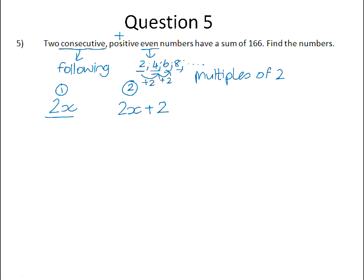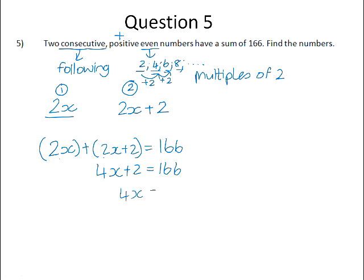So I am told here that two consecutive even numbers have a sum of 166. So if I add them, 2x plus 2x is 4x. 4x plus 2 is 166. Minus 2 from both sides gives you 4x to be 164. 164 divided by 4 is 41.